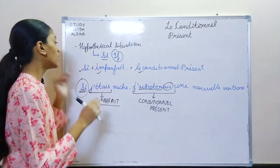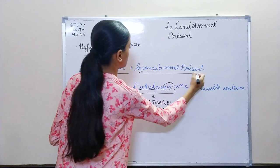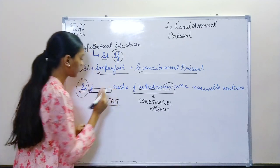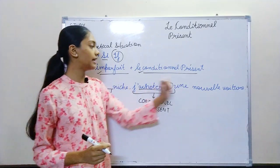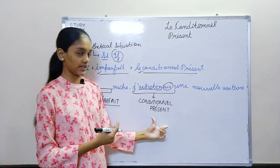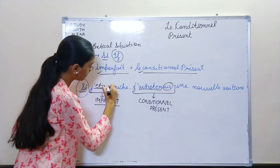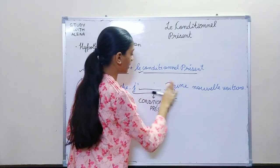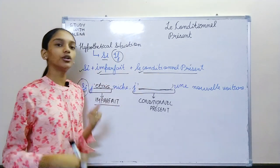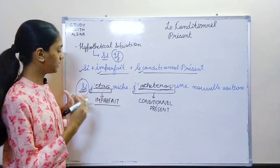Now, how would questions come? You will be given si and either imparfait will be a blank or conditional present will be a blank. If you have si and conditional present, then in between there would be imparfait — you would write être in imparfait. Or the other way around: if you have si and imparfait, you will put conditional present. That is how questions will appear in your exam.